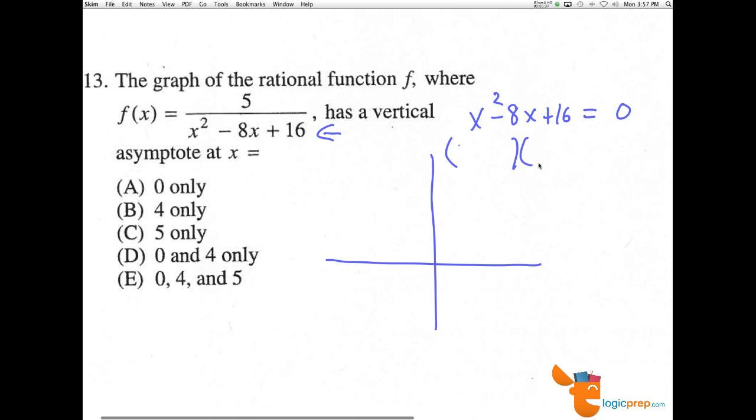So if we factor this out here, we find the zero values, we have x and x and we'll do negative 8x and positive 16 so we're going to do minus 4 minus 4. And we know that x minus 4 can't be equal to zero. So x can't be equal to 4 when I add it over.